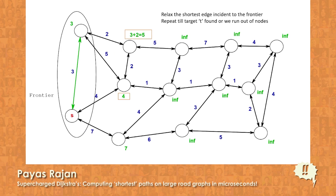On each iteration, we take the shortest edge incident on the frontier, add the destination node to the frontier, and update labels on adjacent nodes if needed. For example, a node's label was updated to 5 from infinity because we found the shortest path from S to that node via an intermediate node with a total distance of 5. On the other hand, we did not update the label for another vertex because the new path found was actually longer than what we already knew.